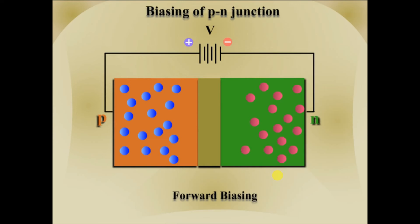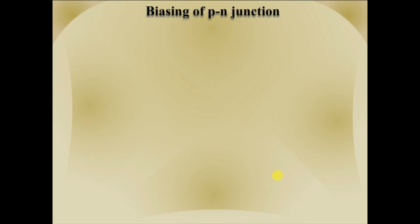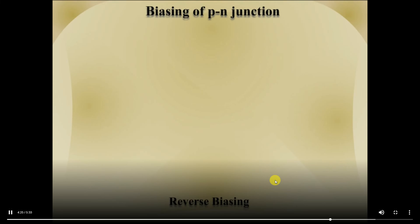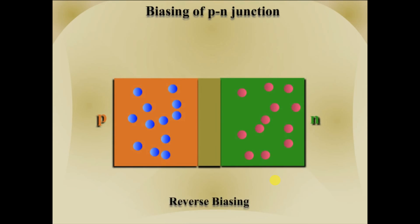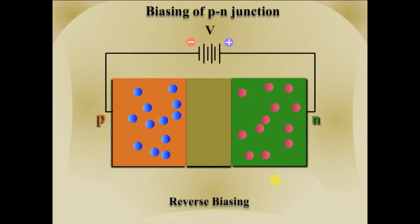We can conclude that a PN junction offers low resistance when forward biased. In reverse biasing, the p region of the junction is connected to the negative terminal of the external battery, whereas the n region is connected to the positive terminal. As can be seen from the diagram, the applied voltage V drops across the depletion layer but in the direction of the potential barrier itself, and the potential barrier increases to Vb plus V. As a result, the width of the depletion layer increases.